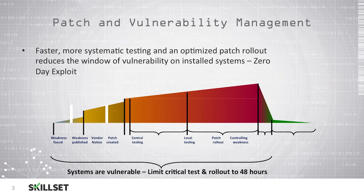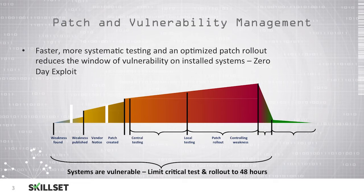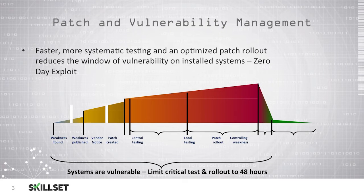We can see the process at the bottom from when a weakness is found and published to when the vendor is notified and they create a patch. Once the patch is created, it falls on your system administrators to do their centralized and local testing and then roll out the patch. Once they roll out the patch to all of your systems, you have now controlled the weakness. It is critical that this process occur quickly in order to protect your systems that are vulnerable.